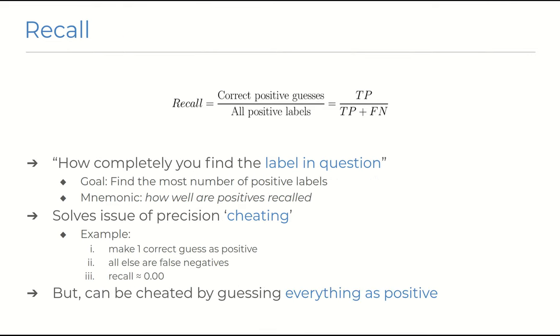So now we have recall. And this is like a counterpart to precision and it's notably different in that it takes the negative labels into the equation. It asks the question of how many positive labels you've found out of the total number of positive labels that exist, almost directly countering the issue seen with precision. And of course, the equation for this comes down to the number of correctly predicted positive labels divided by the number of positives you've got correct plus the number of positives you've got wrong.